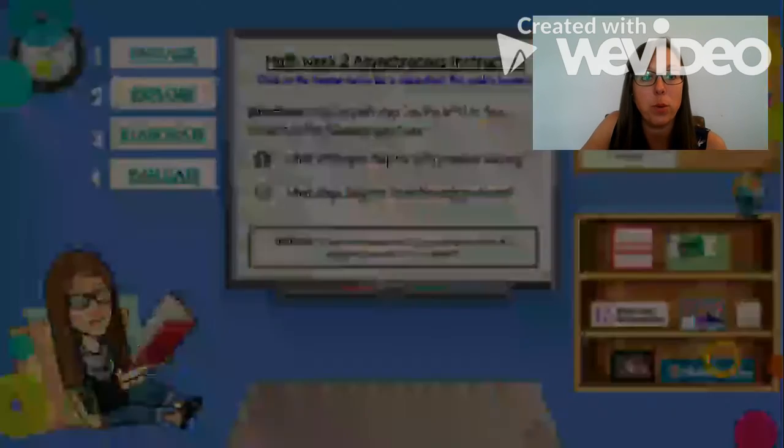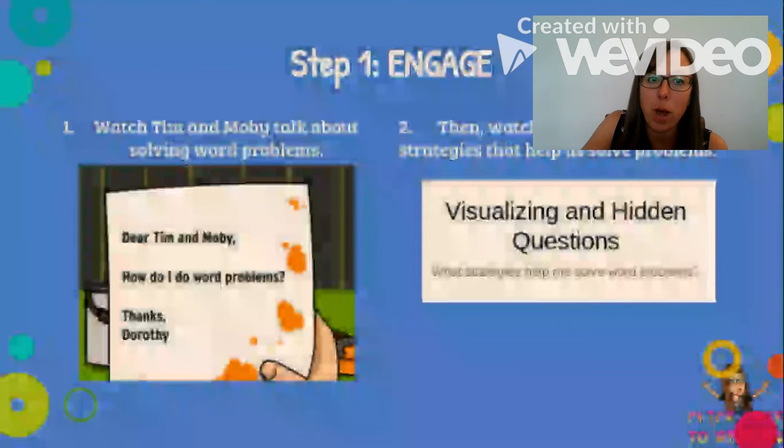The first step will be to engage. You're going to watch a Brain Pop video about solving word problems, and watch another video giving you strategies to solve word problems. Two of them: one of them is visualizing, and the second is searching for hidden questions.